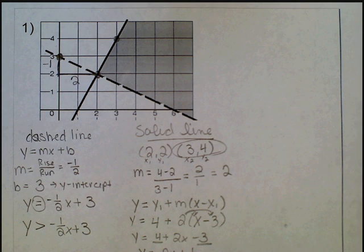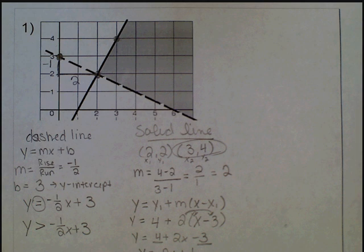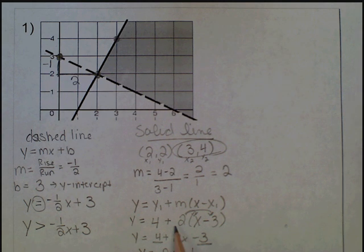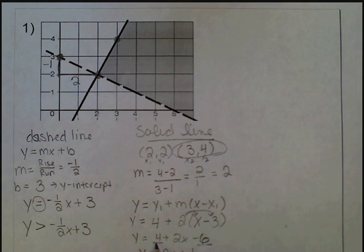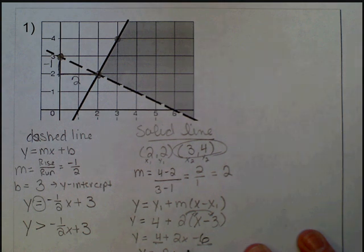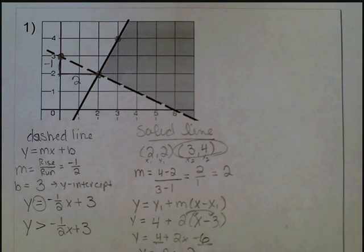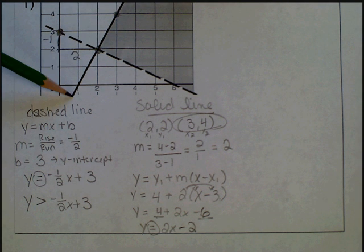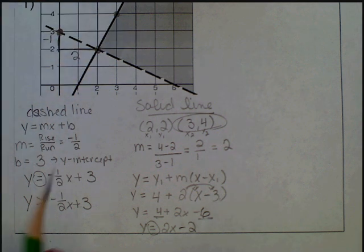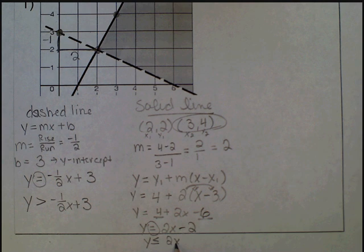Now I'm ready to determine the inequality — but I need to correct a mistake first. I didn't multiply 2 times negative 3 when I distributed. That should be negative 6, so 4 minus 6 gives negative 2, making the equation y equals 2x minus 2. Now for the inequality: it's a solid line, so I include the equal sign, and the shading is underneath the line, so y is less than or equal to 2x minus 2.